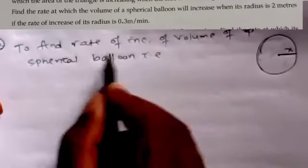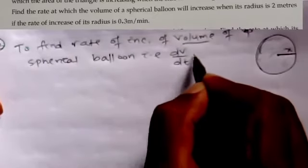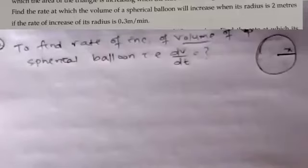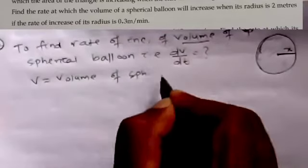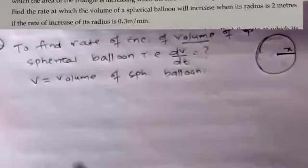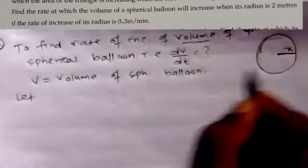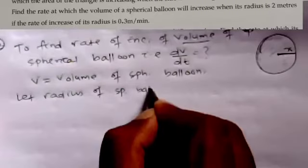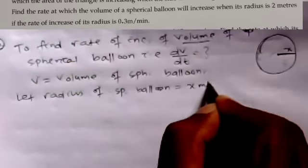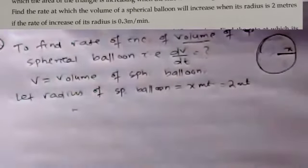We have to find the rate of increase using derivatives. V is the volume, so we have to find dV/dt, where V is the volume of the spherical balloon. The radius is given as 2 meters.